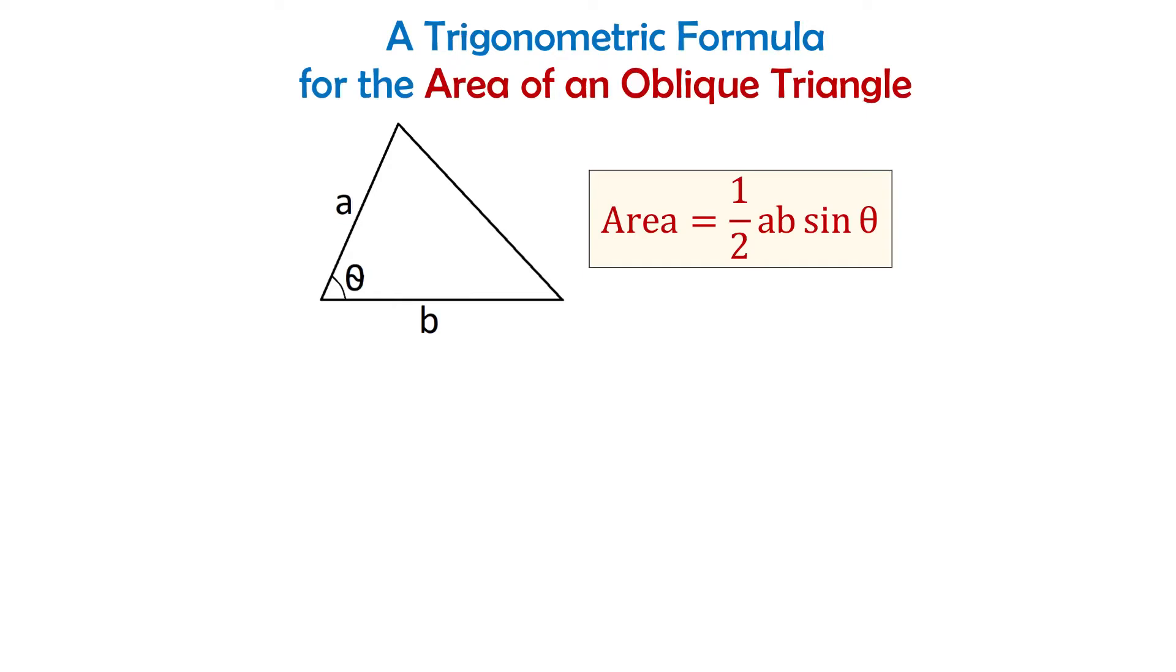In this video we will talk about a trigonometric formula for the area of an oblique triangle, and an oblique triangle is any triangle that doesn't have a right angle.